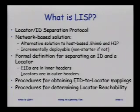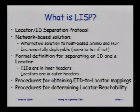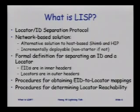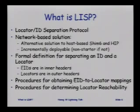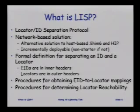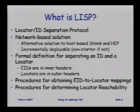LISP is a formal definition of separating the ID and the locator. We're going to use a map and encapsulation scheme where the inner header — the header built by the host — contains EIDs. They're still IP addresses as we know and love them, and you get those addresses out of DNS. Hosts don't have to change. The tunnel routers that do the encapsulation put a new outer header on the packet with locator addresses that are routed in the Internet based on topological significance. The LISP draft describes procedures for obtaining EID-to-locator mappings and determining locator reachability.